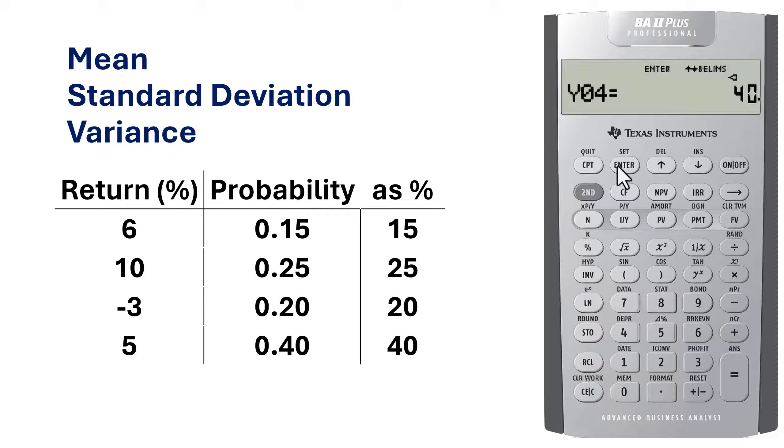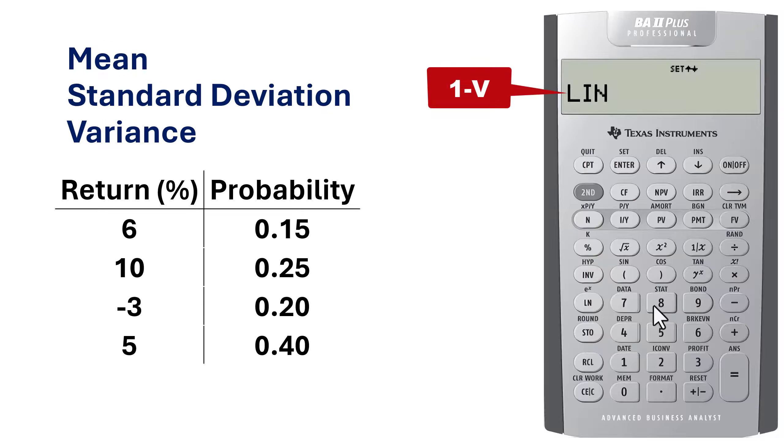Next, to generate the statistics, press Second Start. We want one variable statistics. And if 1v is not displayed here, then press Second Enter repeatedly until it shows 1v.